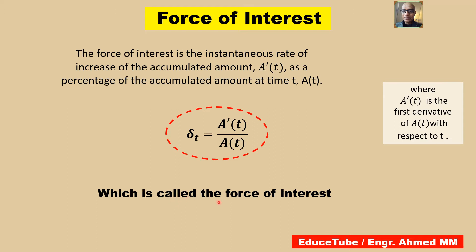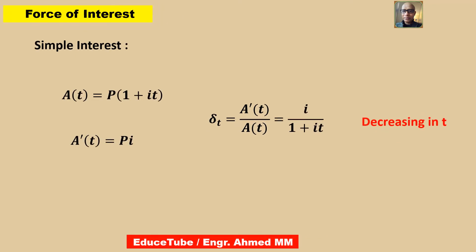In other words, the force of interest is the instantaneous rate of growth of investment per dollar invested at time point t, and it is called the force of interest at time t. It is nothing but the ratio of these two. To understand how we got this, you can visit my video Mathematics of Finance 5. In this video, we will use this equation directly as delta t equal to a prime t by a t. Our goal is to understand investment growth based on the force of interest — and the force of interest that corresponds to simple interest and compound interest.